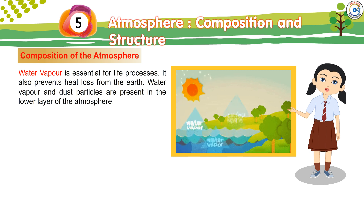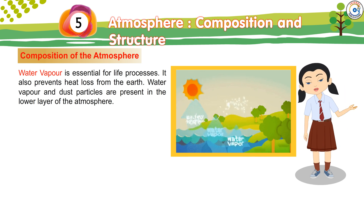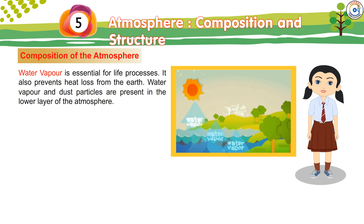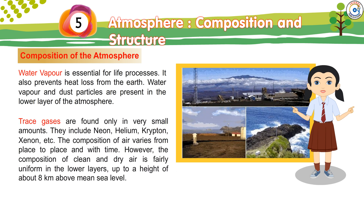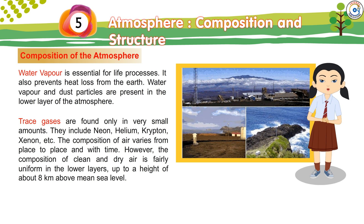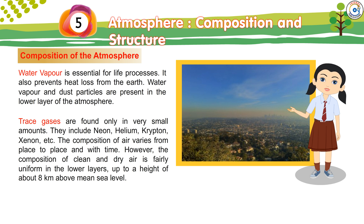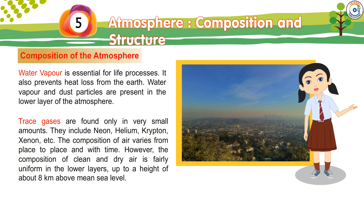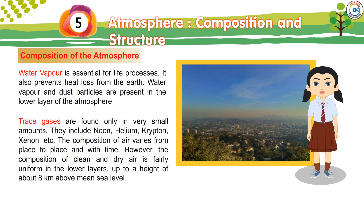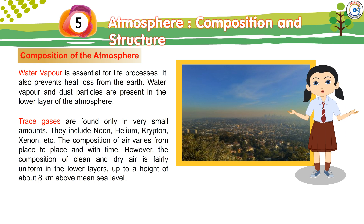Water vapor is essential for life processes and also prevents heat loss from the Earth. Water vapor and dust particles are present in the lower layer of the atmosphere. Trace gases — including neon, helium, krypton, xenon, and others — are found only in very small amounts. The composition of air varies from place to place and with time; however, the composition of clean and dry air is fairly uniform in the lower layers up to a height of about 8 km above mean sea level.